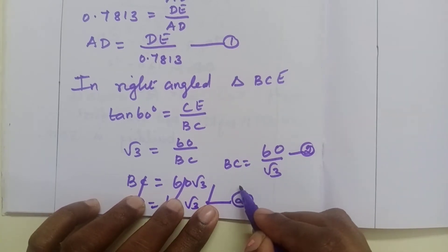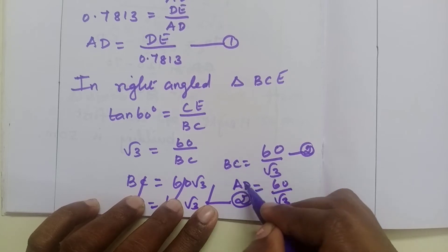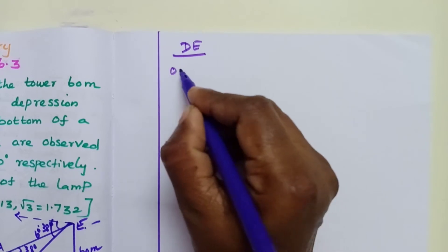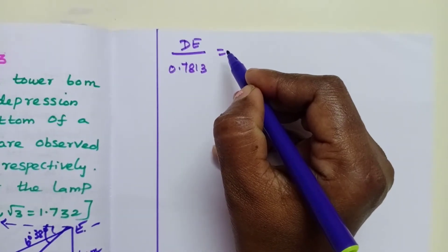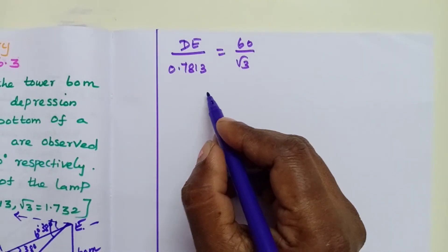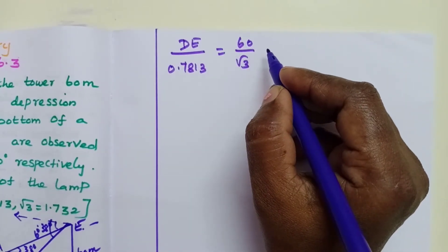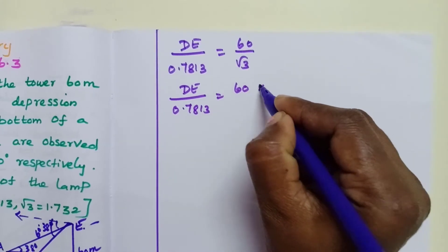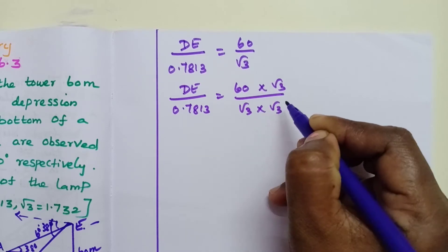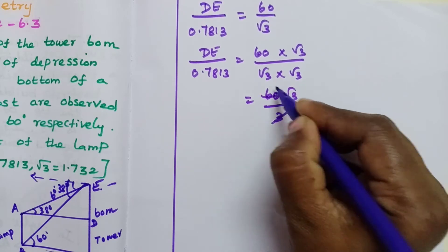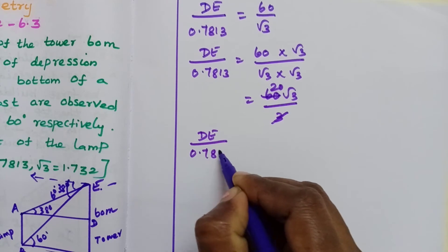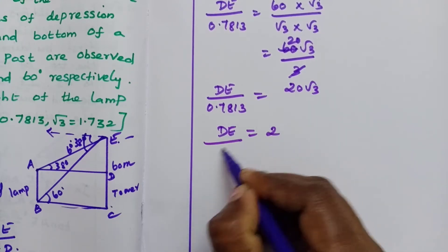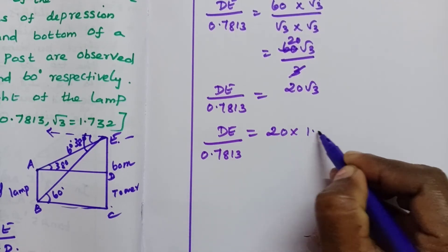So if equation 1 and 2 are solved, equation 1 left side: DE by 0.7813 equals 60 by root 3. To rationalize the denominator: DE by 0.7813 equals 60 times root 3 by root 3 times root 3. Now 60 root 3 by 3, which simplifies to DE by 0.7813 equals 20 root 3. So DE equals 20 times 1.732.